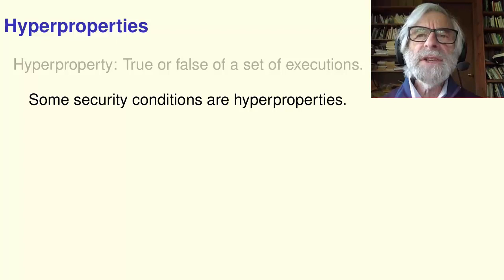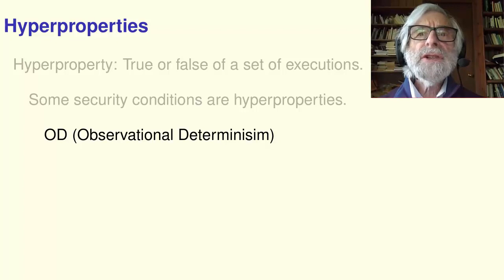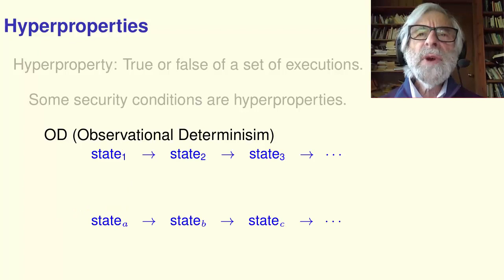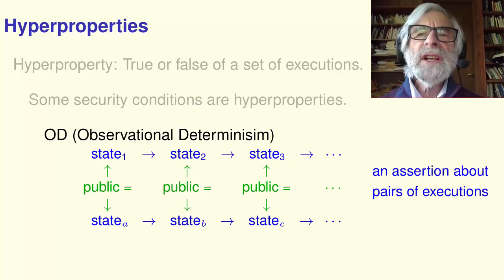For example, Observational Determinism, or OD. OD assumes that an execution is a sequence of states, and a state consists of two parts, a public state and a secret state. OD requires that if any two executions have the same initial public states, then they always have the same public states. This is an assertion about pairs of executions, not about a single execution.